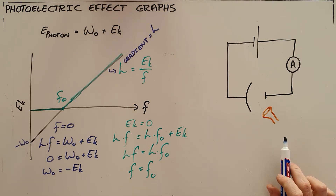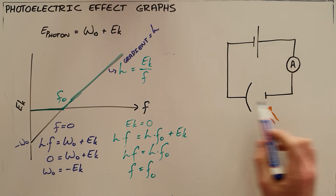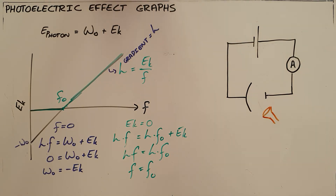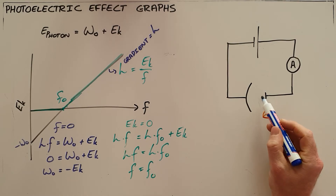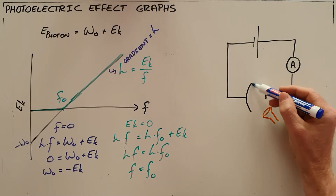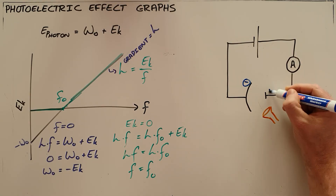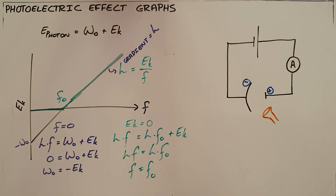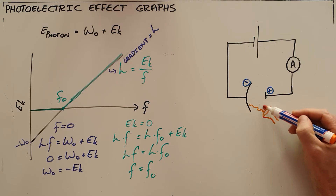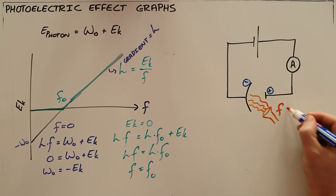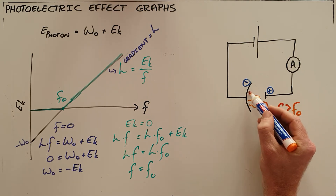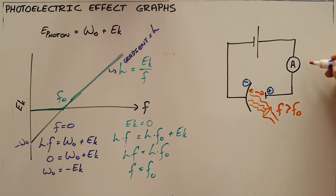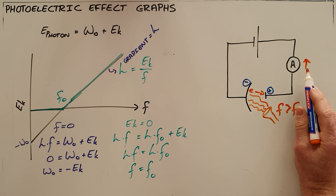The second common demonstration of the photoelectric effect uses an electric circuit. We have a battery connected to an ammeter connected to a photocell. A metal plate is connected to the negative terminal of the battery and another metal to the positive terminal. By shining light onto the metal, if the frequency of the light exceeds the threshold frequency, electrons are ejected from the surface and attracted towards the positive terminal, registering a current on the ammeter.